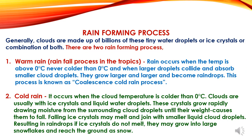Now we will study about the rain forming process. Generally, clouds are made up of billions of tiny water droplets or ice crystals or a combination of both. There are two rain forming processes. The first is warm rain processing — rainfall in the tropics. Rain occurs when the temperature is above 0°C; larger droplets collide and absorb smaller cloud droplets, they grow larger and become raindrops. This process is known as coalescence. The second is cold rain process: it occurs when cloud temperature is colder than 0°C. Clouds contain ice crystals and liquid water droplets; crystals grow rapidly drawing moisture from surrounding droplets until their weight causes them to fall. Falling ice crystals may melt and join smaller droplets to form raindrops; if they do not melt, they may grow into large snowflakes and reach the ground as snow.